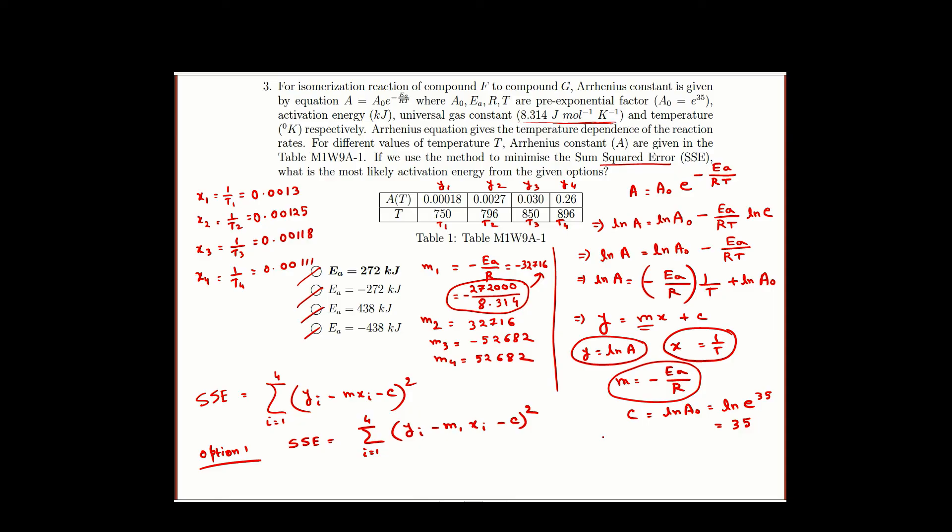You have to just put this xi, put the first m1 here, c is same for all the terms which is 35 and you have to subtract that from this yi and take the square of it and take the sum of it. If you calculate this you will see you will get something like 1.18 plus 0.0006 plus 0.009 plus 0.001.